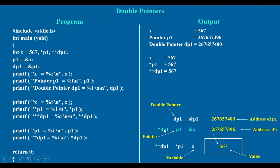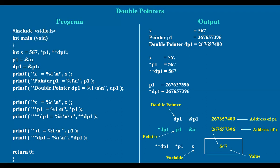Suppose you consider this as 'a' — star a gives this value. That is why double star dp1 is showing this address, x value. Suppose if you take p1, star dp1 will be this same value. dp1 is this, star dp1 gives p1. So when you just remember the set x, ampersand x, and p1, star p1 — this set of values gives you a clear picture of these pointers. The same logic is applied here also for dp1 with the double pointer.